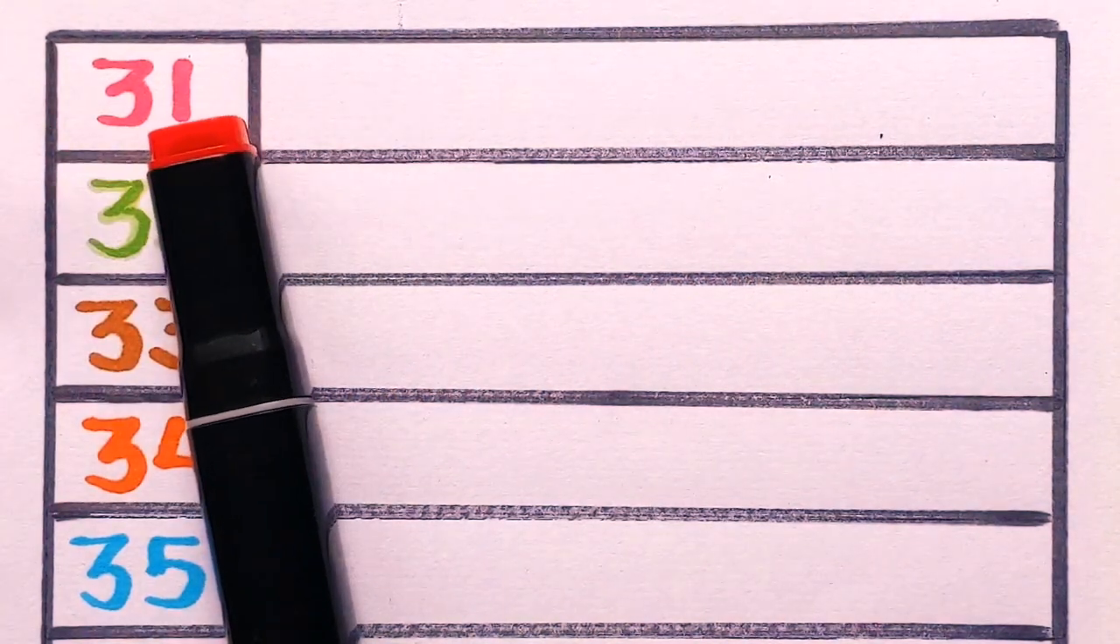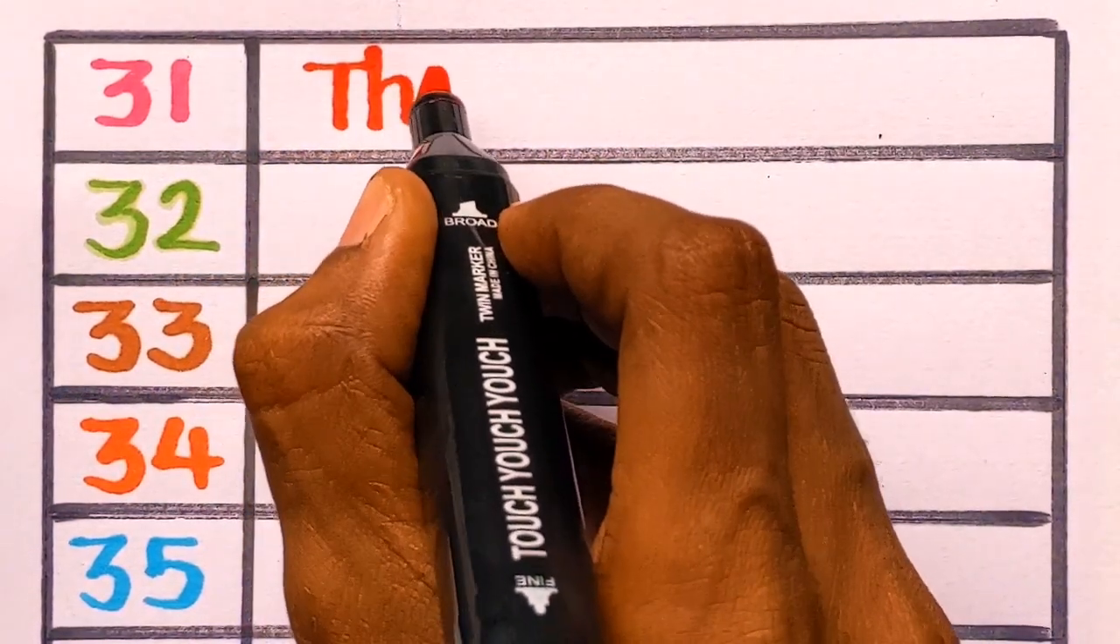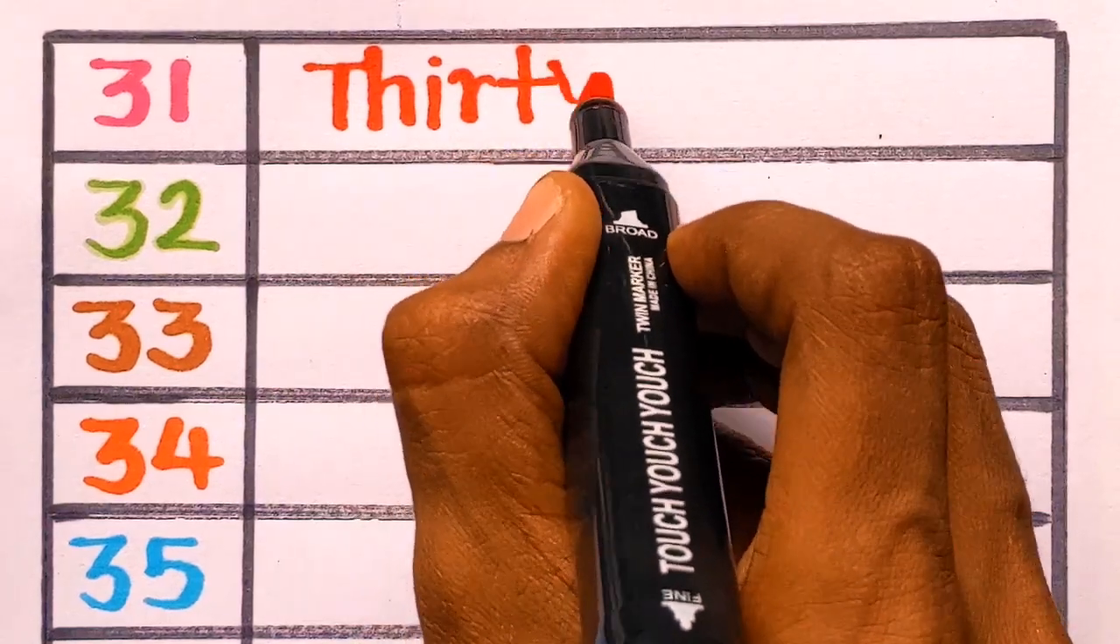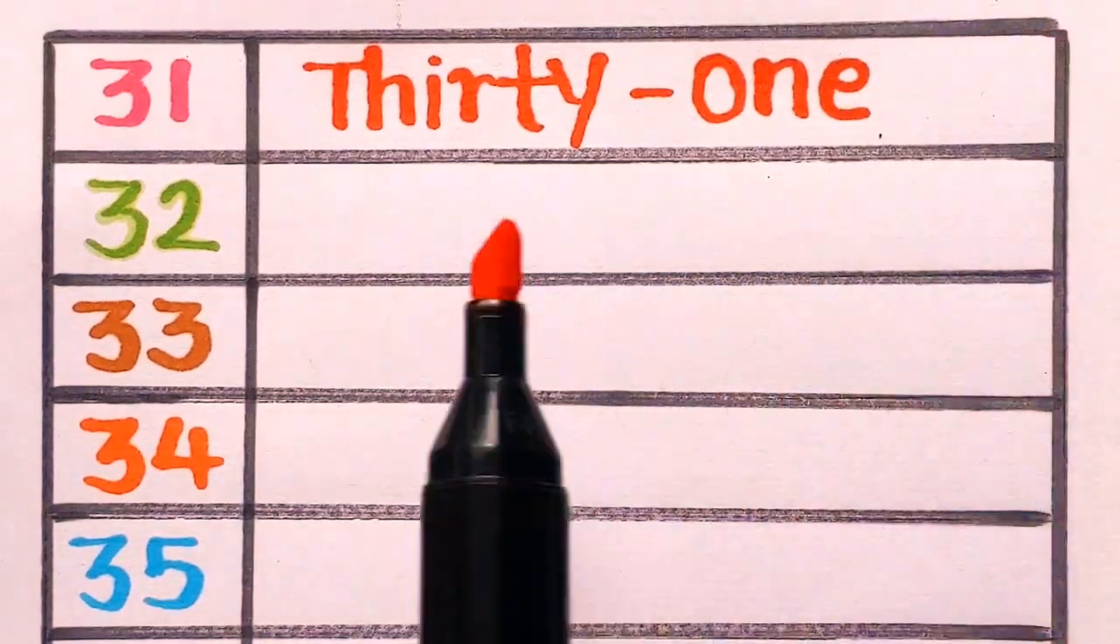At first, 31. T-H-I-R-T-Y, thirty. O-N-E, one. 31, thirty-one with a red color.